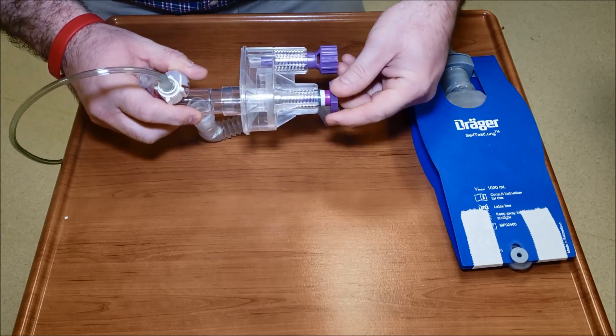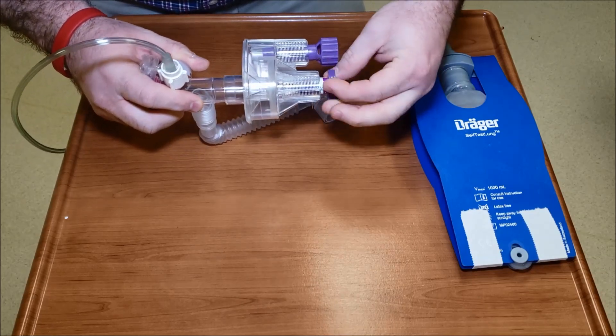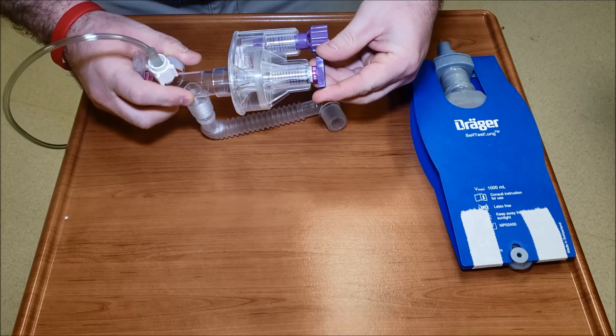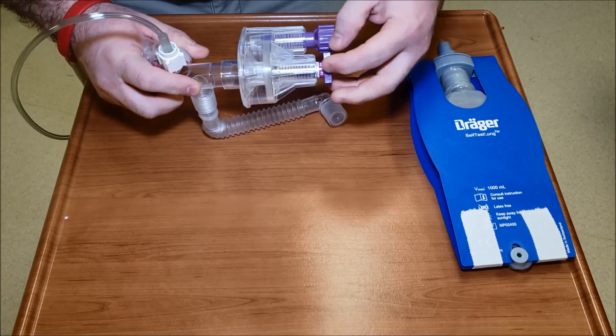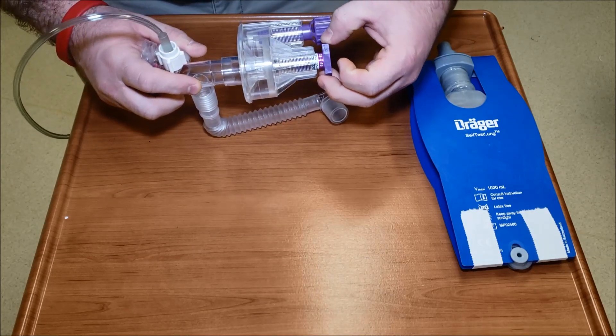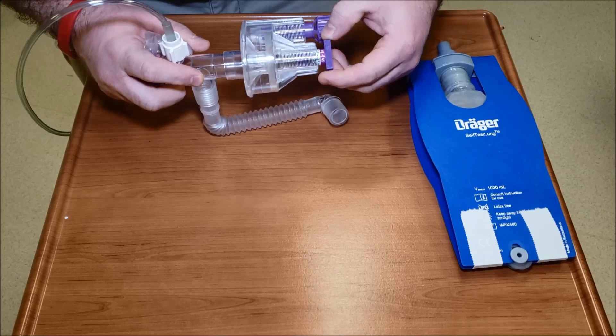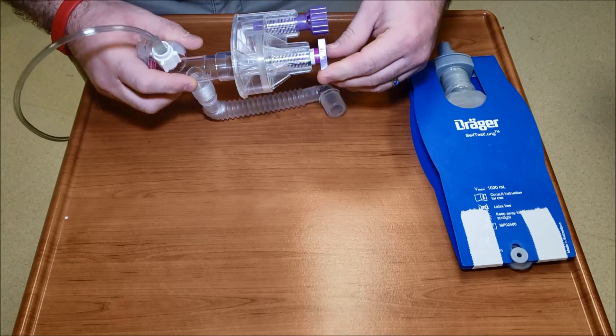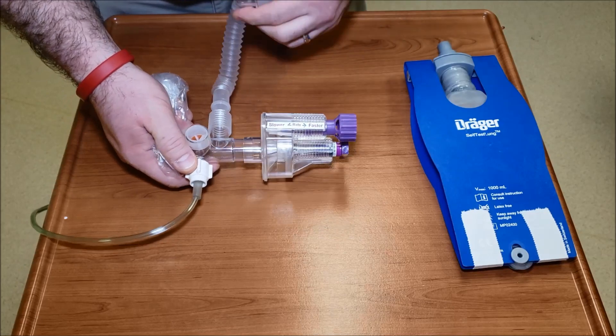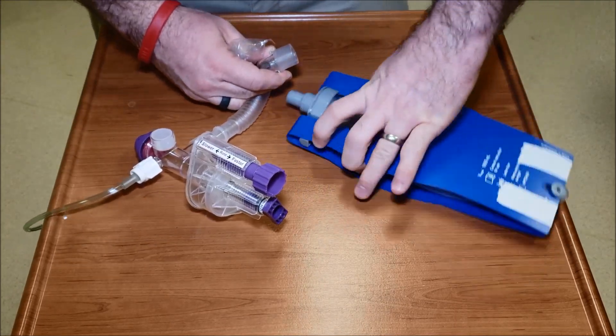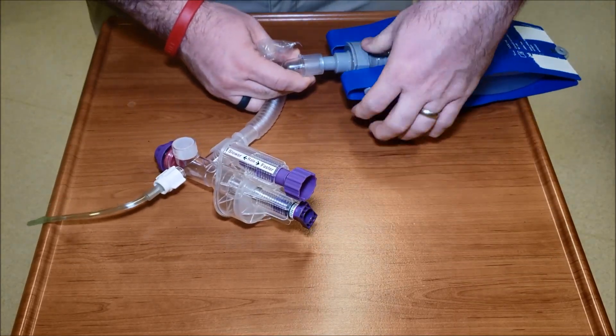As the instructions said, we're going to start about 25, so we're going to get it right to where it's pretty much set out of the box. The bottom of the line is 25 and the line between the purple and the white is near 35, so let's go right about there. Now I'm going to hook my test lung up.